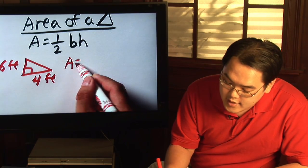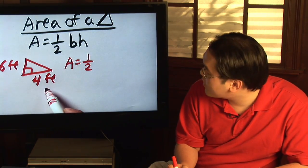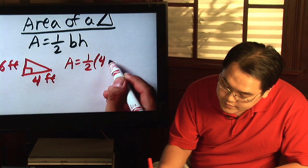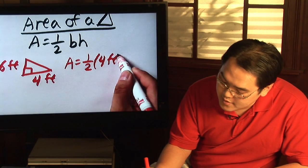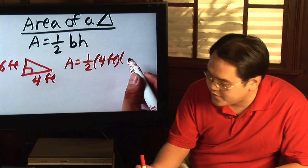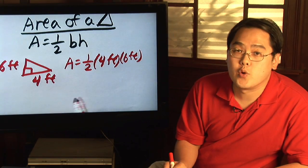you have A is equal to one half, the base is the flat side, four feet, times the height, which is six feet, and you're ready to go.